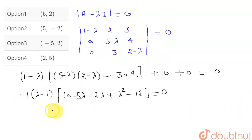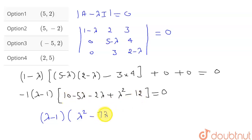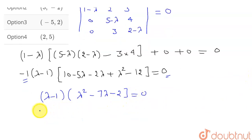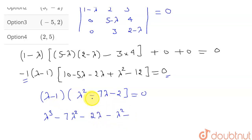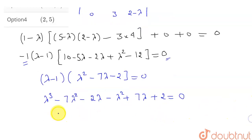Dividing both sides by minus 1 removes the sign, giving (λ−1)(λ² − 7λ + 10 − 12) = 0, which simplifies to (λ−1)(λ² − 7λ − 2) = 0. Expanding: λ³ − 7λ² − 2λ minus λ² plus 7λ plus 2 = 0, combining to λ³ − 8λ² + 5λ + 2 = 0.